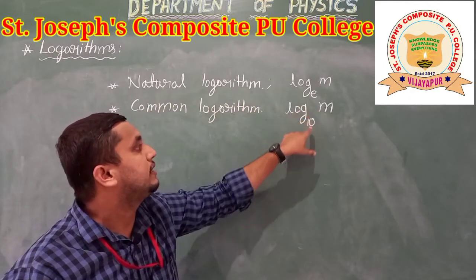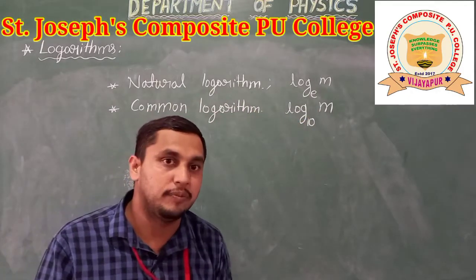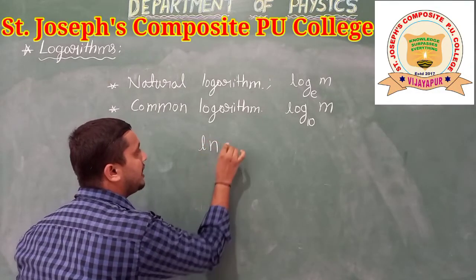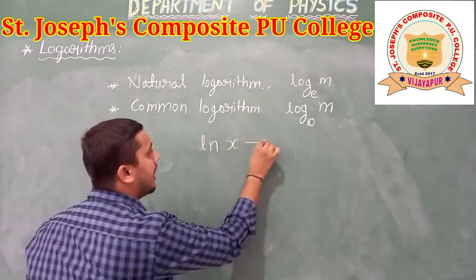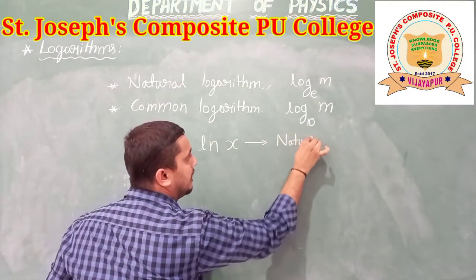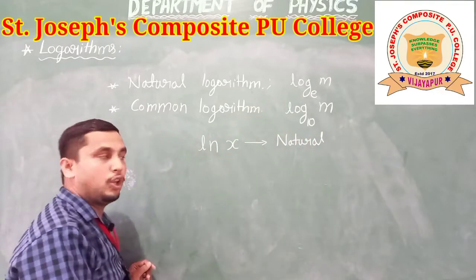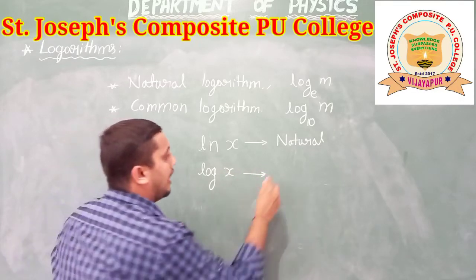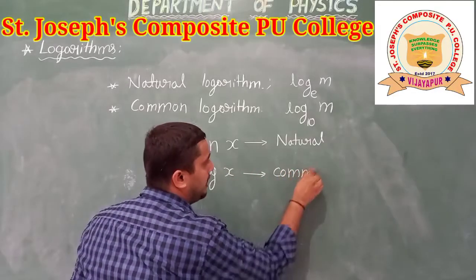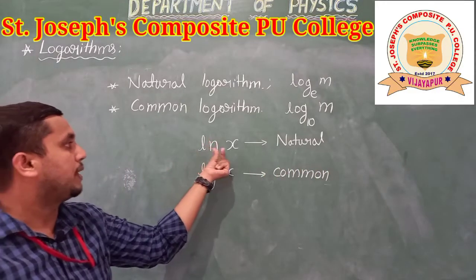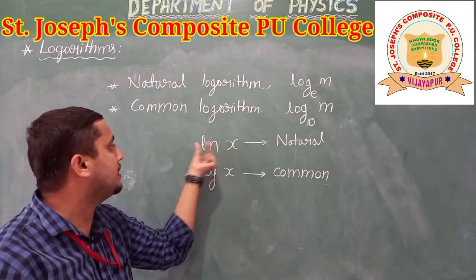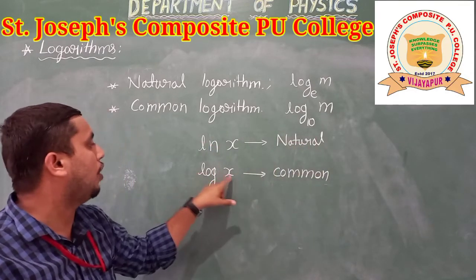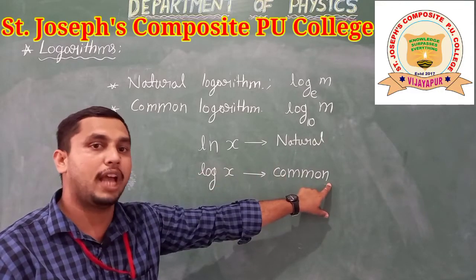In physics, we write it as like this: if it is ln x, that means it is a natural logarithm. If you simply write log x, that is common logarithm. So in physics, ln x is taken as natural logarithm and log x is common logarithm.